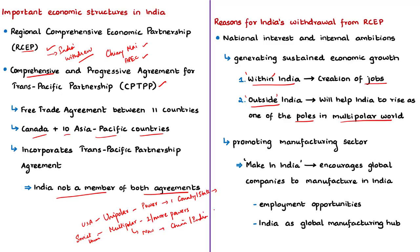Even in 2014, our Prime Minister articulated the vision of India being a pole in the multipolar world. For this, the Indian government focused on promoting the manufacturing sector, and the Make in India program was launched. This program encouraged global companies to manufacture products in India, aimed at creating employment and self-employment opportunities for our youth, and at making India a global manufacturing hub. These are India's economic interests — Make in India and promote manufacturing within India — which are relevant in the context of India's decision on RCEP.